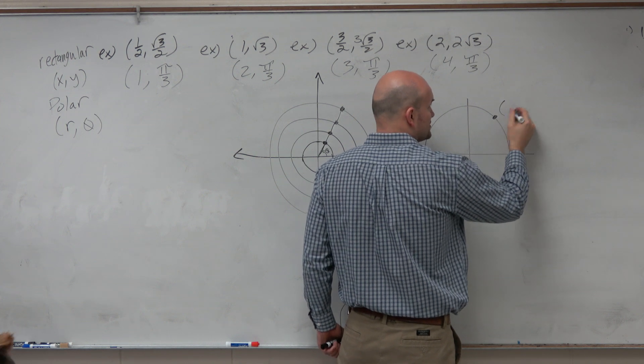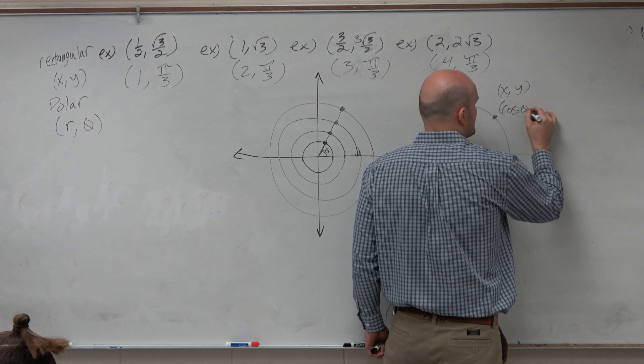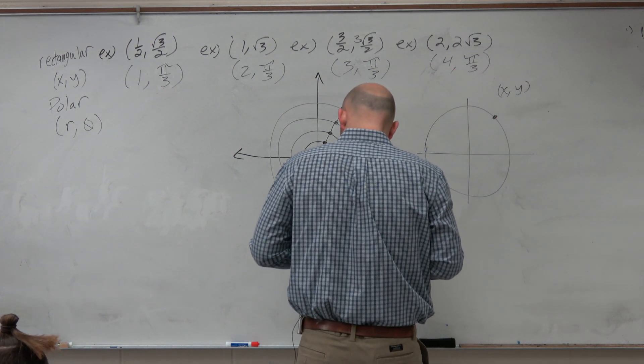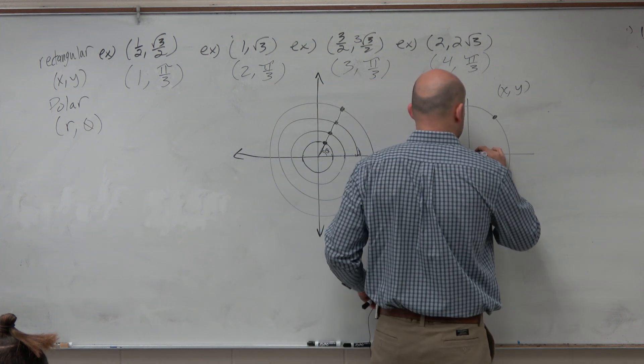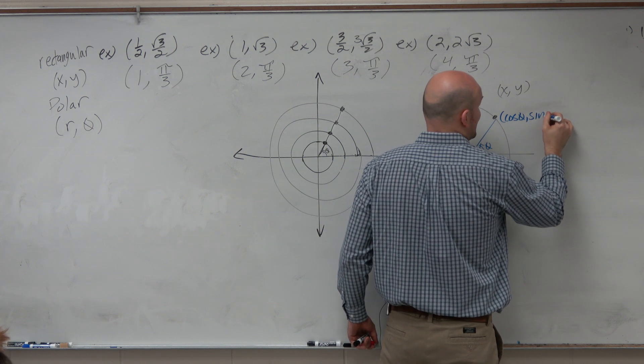A random point on the unit circle we called (x, y), right? But we also called that (cosine of theta, sine of theta). Let me do it in red. So we called it (x, y), or in blue. But we also called it (cos θ, sin θ).